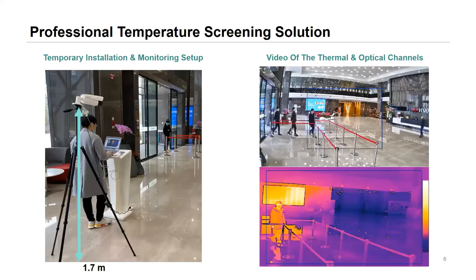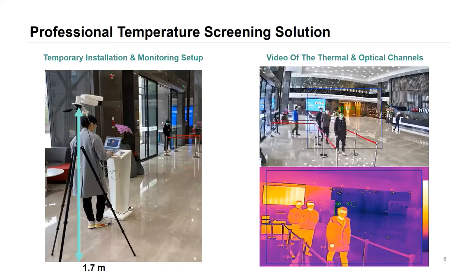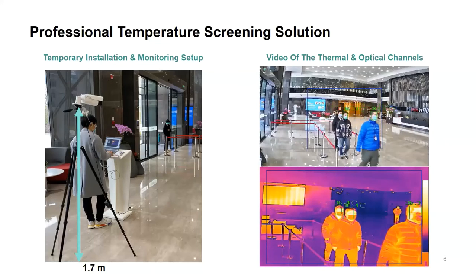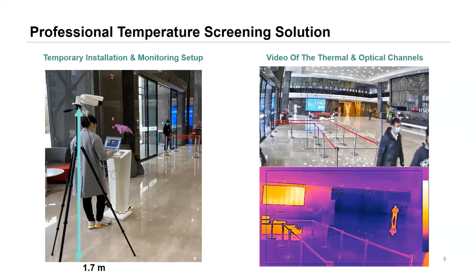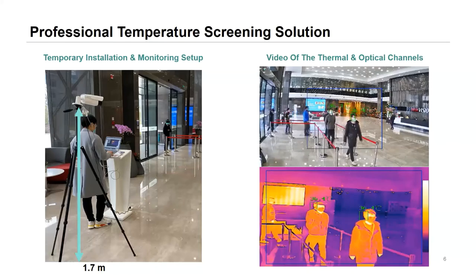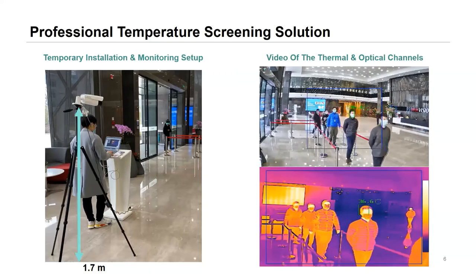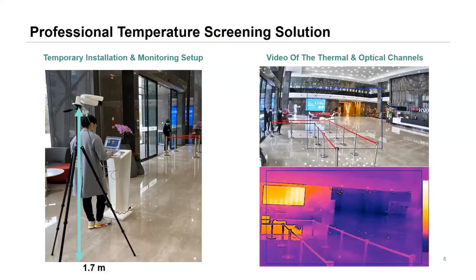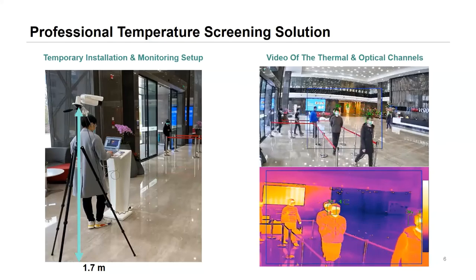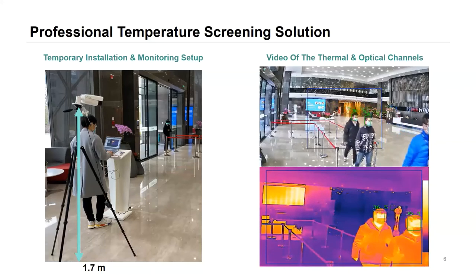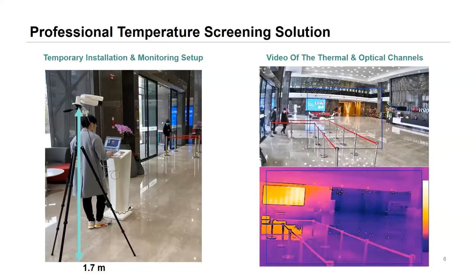Here's an example of the professional temperature screening solution in action. As you can see on the right-hand side, we have two video streams — one optical and one thermal — because the cameras are what we call bi-spectrum: they have both a thermal and an optical camera built into the unit. The optical camera allows us to run a face detection algorithm, which picks out someone's face and tells the thermal camera to measure only that person's forehead temperature. This helps cut down on false alarms — for example, from people carrying a hot cup of tea or, as you can see here, a large TV monitor in the background. The camera is only interested in the temperature of individuals walking past.